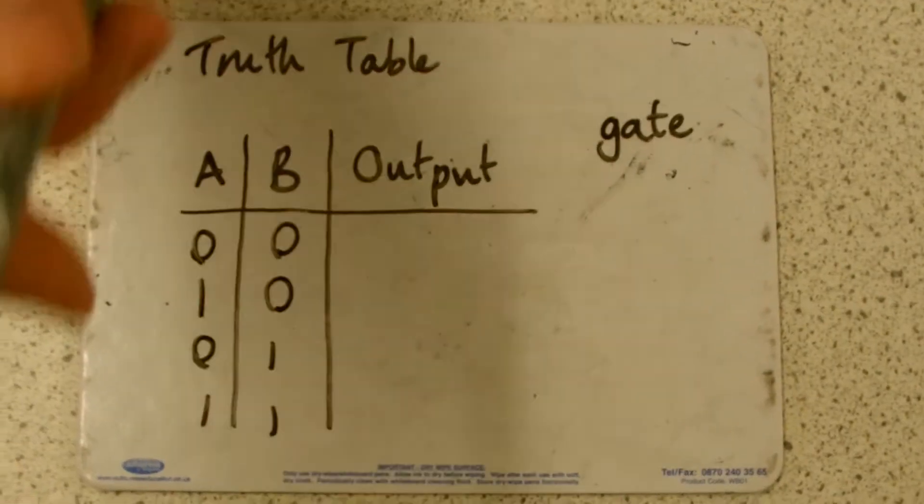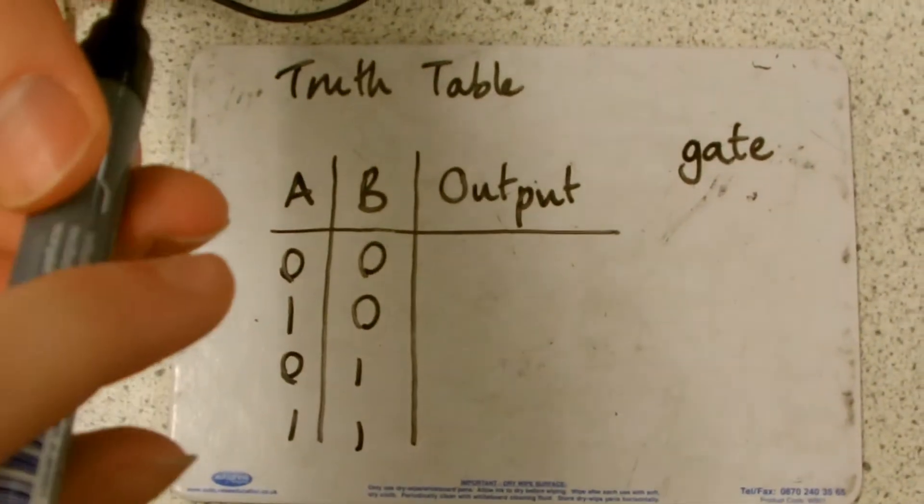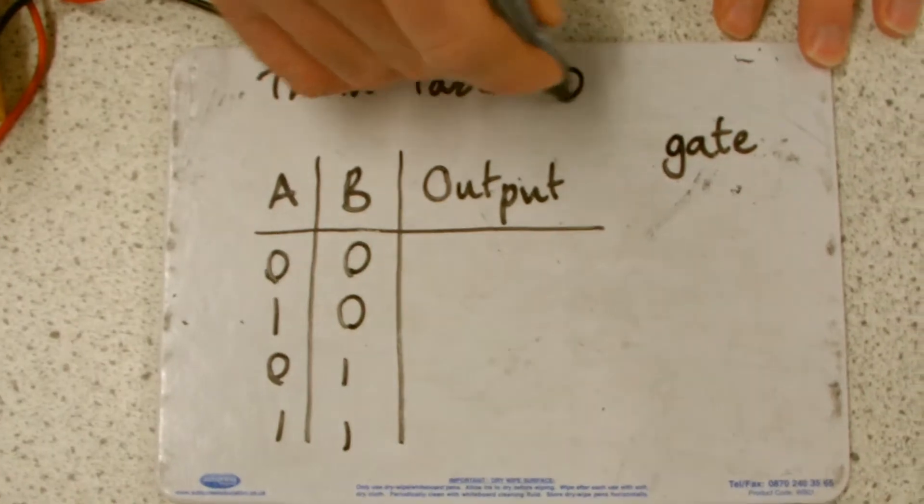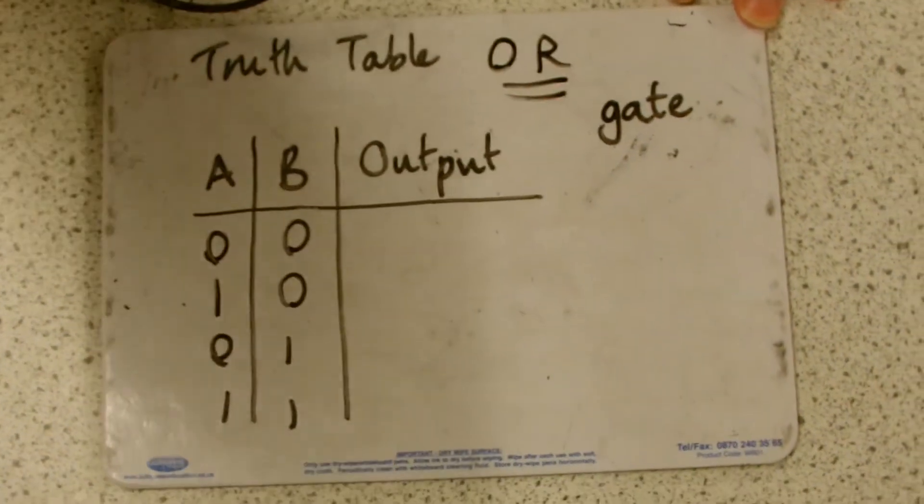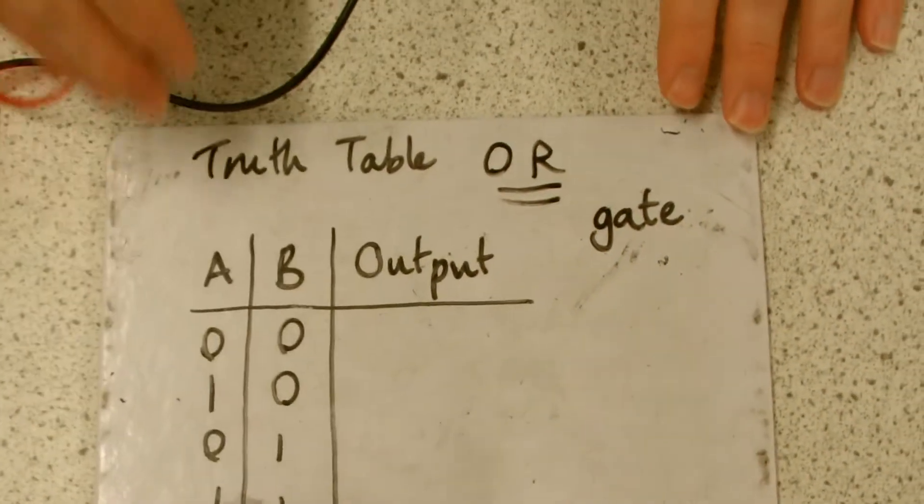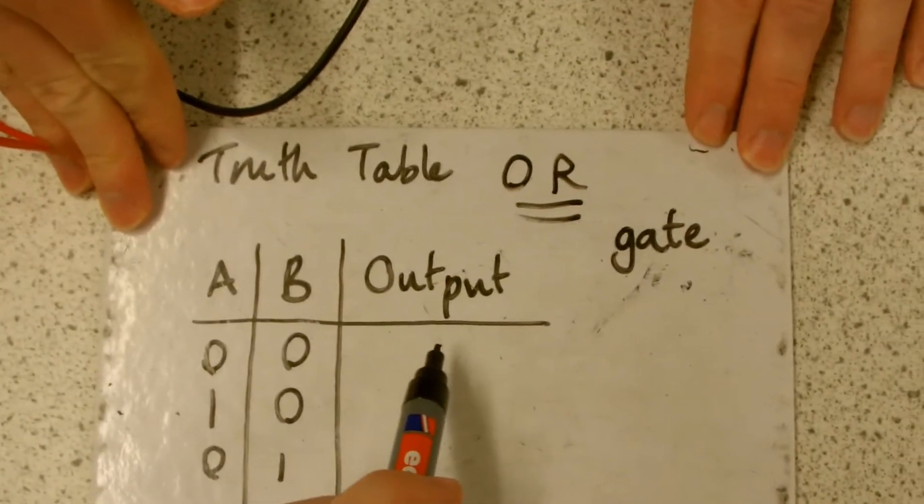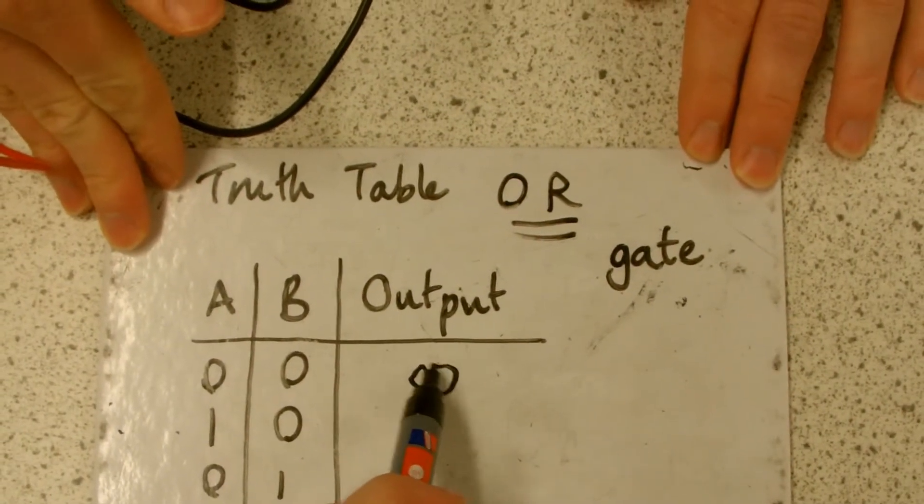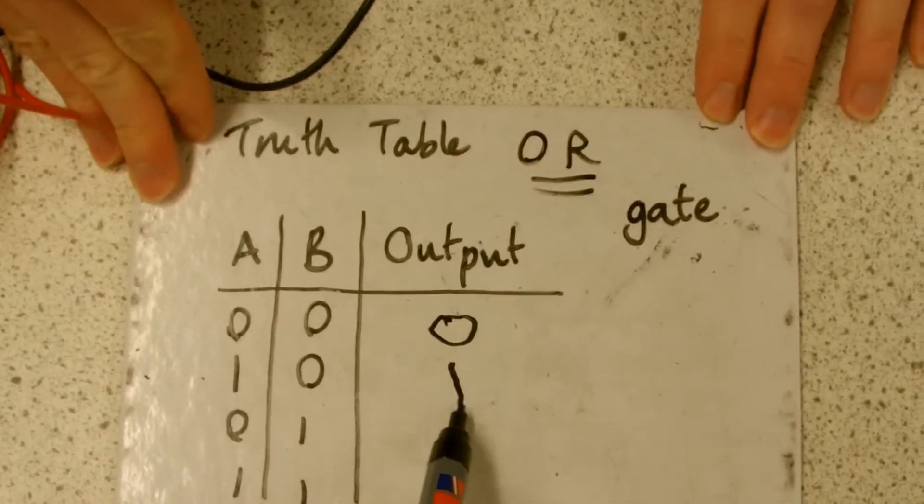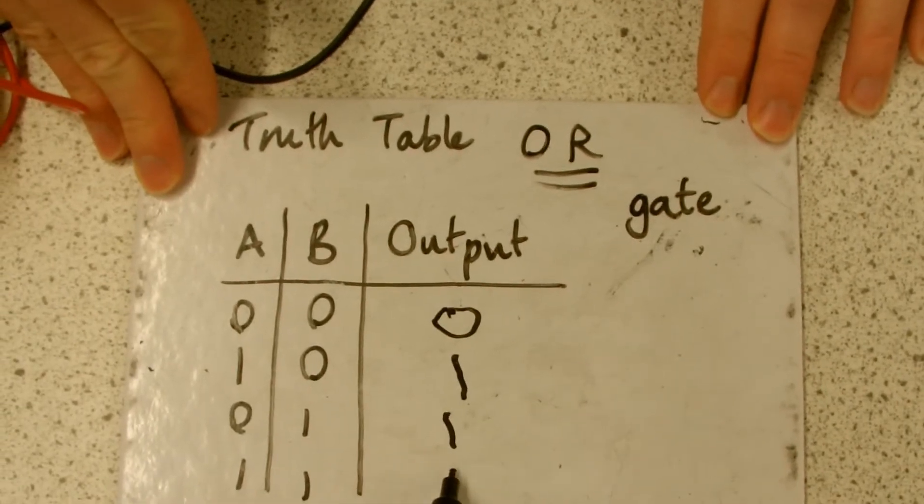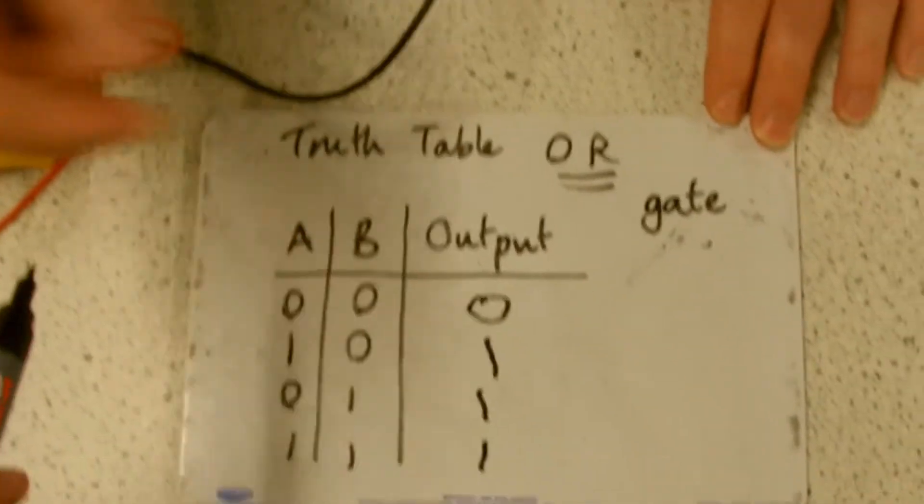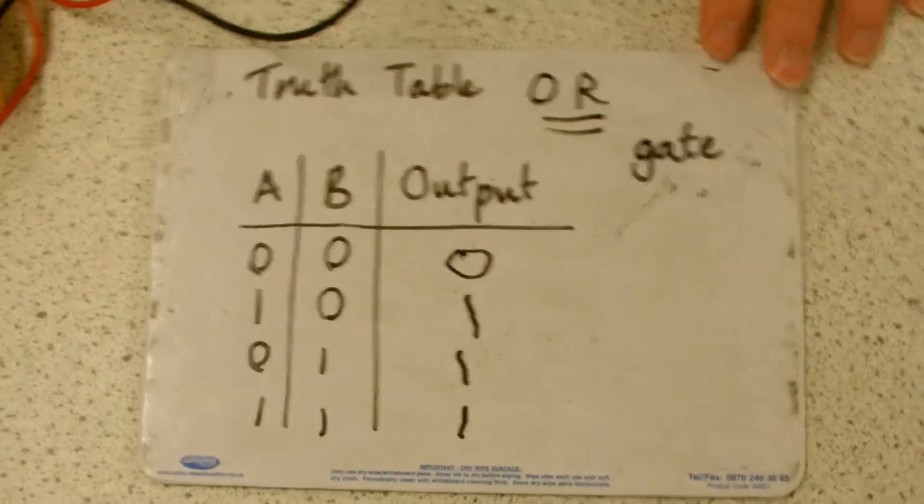My camera is going to complete the output table for the OR gate. I don't write with my left hand. Oh god, this is so hard. Yeah, so it's easy. So A or B, or both of them, then the output is on.